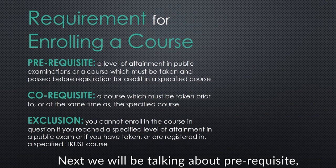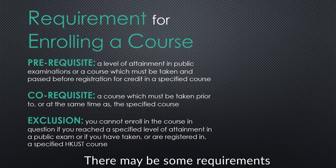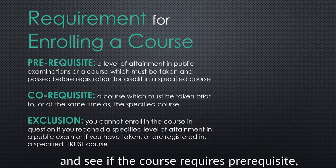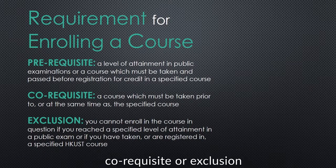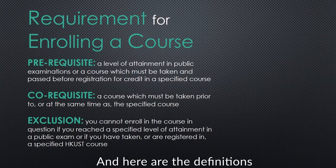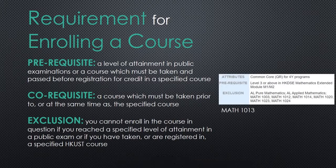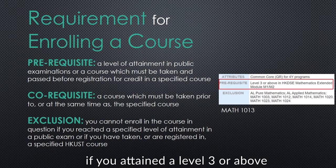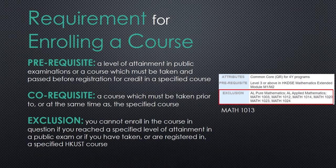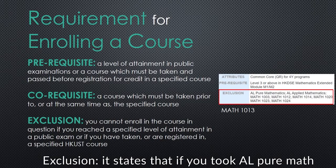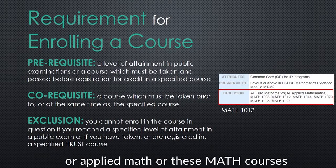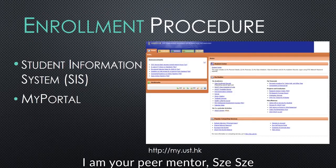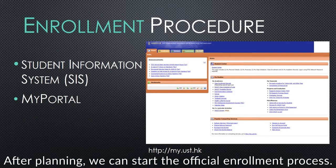Next, we will be talking about prerequisites, co-requisites, and exclusions. There may be some requirements or conditions for enrolling a course. You can check from the course info and see if the course requires prerequisites, co-requisites, or exclusions. Take MATH 1013 as an example. Prerequisite: it states that you can register the course if you have attained a level 3 or above in HKDSE M1 or M2. Exclusion: it states that if you took AL Pure Math, Applied Math, or these math courses offered by HKUST before, then you are not eligible to take MATH 1013. I am your peer mentor, Cece.